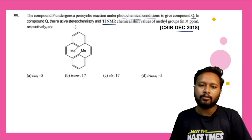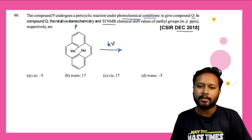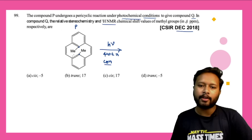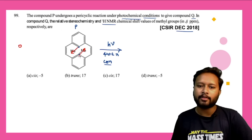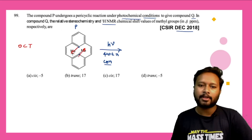Under photochemical conditions, we have a 4N+2π (6π) system. According to the table, a 4N+2π system under photochemical condition undergoes conrotation. Looking at the two methyl groups — this is going in this direction, this is going in this direction — they are opposite. Doing conrotation with opposite directions gives trans. So by the OCT trick, these two methyl groups are going to be trans to each other.